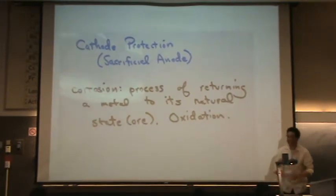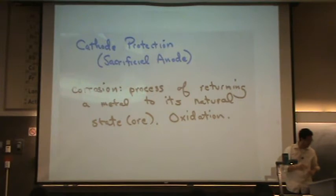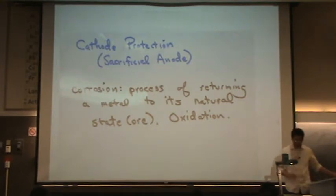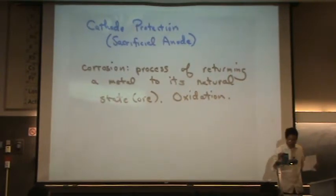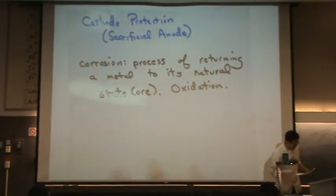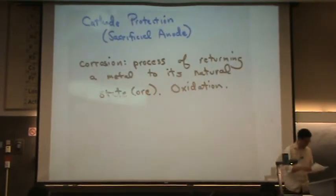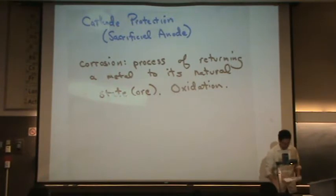It's not nice because we don't want the metal in a natural state — it's useless there. So we want to get it out of its natural state. We use cathodic protection to protect metals by sacrificial anode. Let me show you some examples.